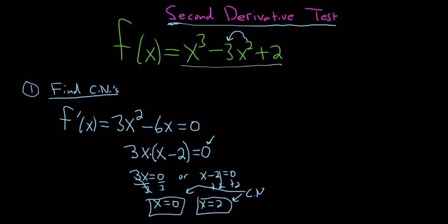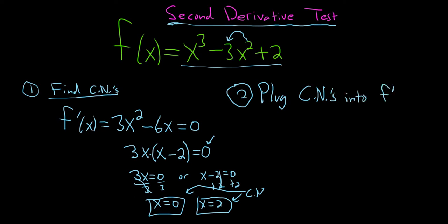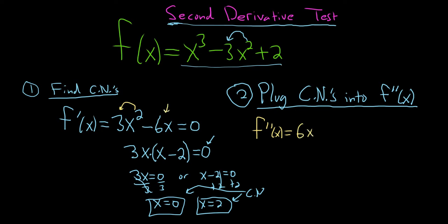Step 2 is to plug the critical numbers into the second derivative. It's important to keep the steps straight — a common source of confusion is mixing this up with finding intervals of concavity. Taking the derivative again, f double prime of x equals 6x minus 6.